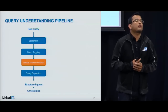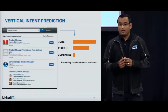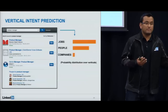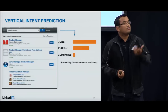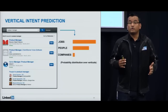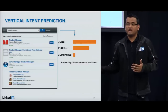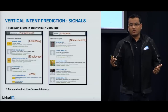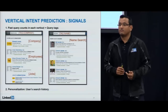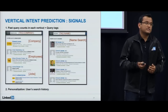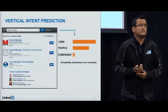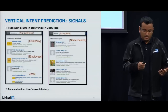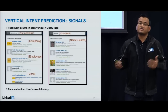The third component is vertical intent prediction: given a query, how do we decide what kind of entities the user is looking for — people, jobs, companies, and so on? For example, for an ambiguous query like 'product manager,' we use all available information about the query and your past behavior to infer a probability distribution over different verticals: most likely you're looking for jobs, possibly people, and very unlikely companies. One signal is query counts from the past — how many times have we seen 'product manager' in job search versus people search. But these counts get sparse due to the long-tail distribution of queries.